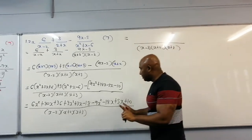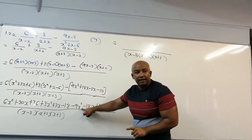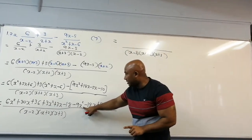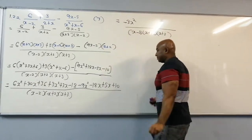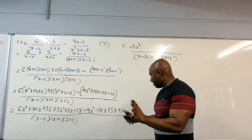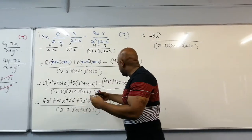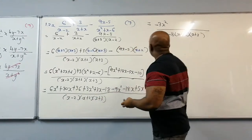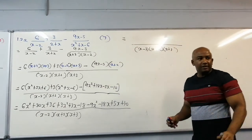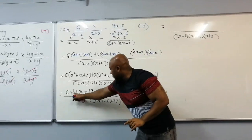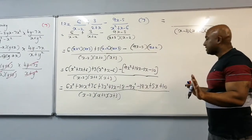Now let's add up our like terms. We have 6x squared plus 3x squared minus 9x squared — that gives 0x squared, so the x squared terms cancel out completely. 6 plus 3 is 9, minus 9, so the x squares are gone.